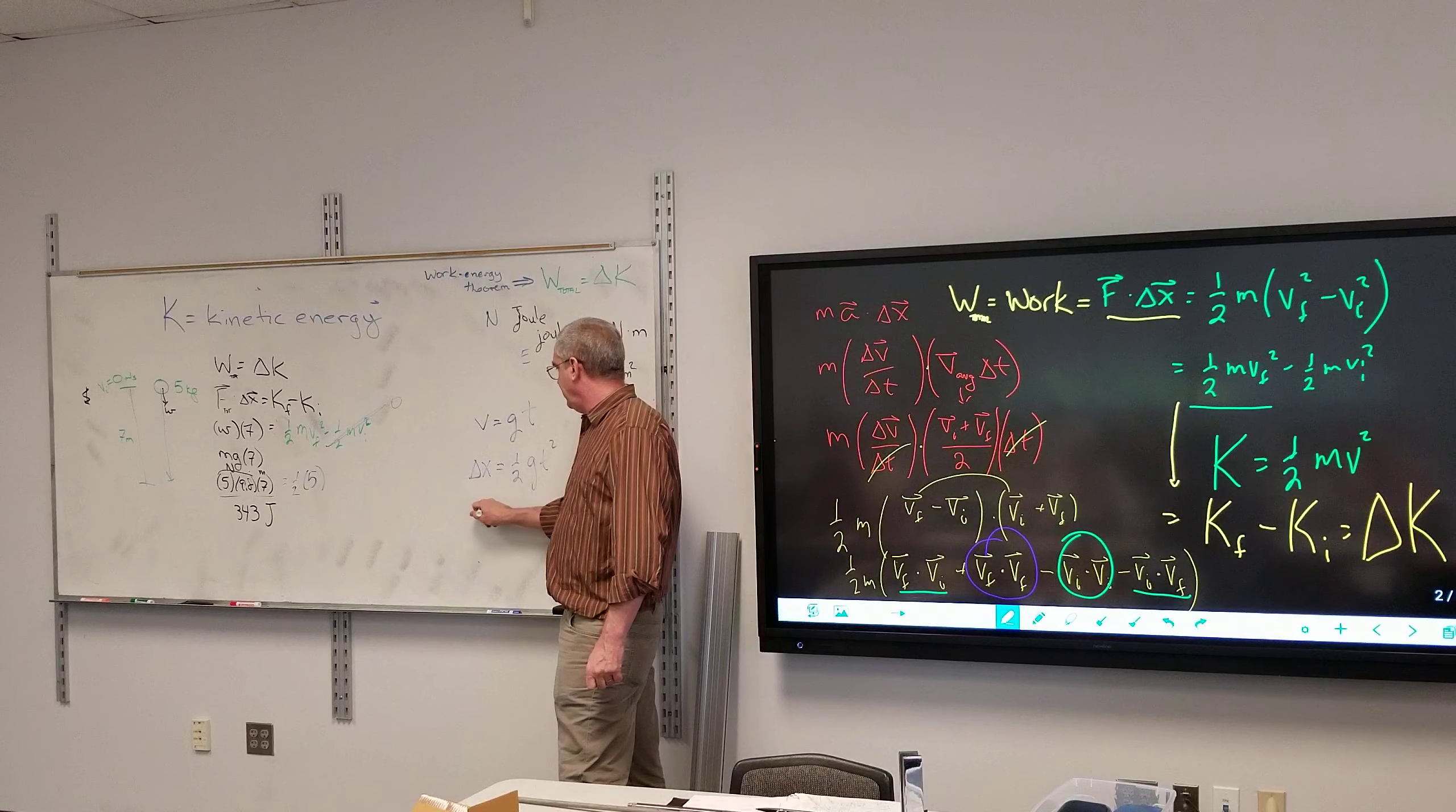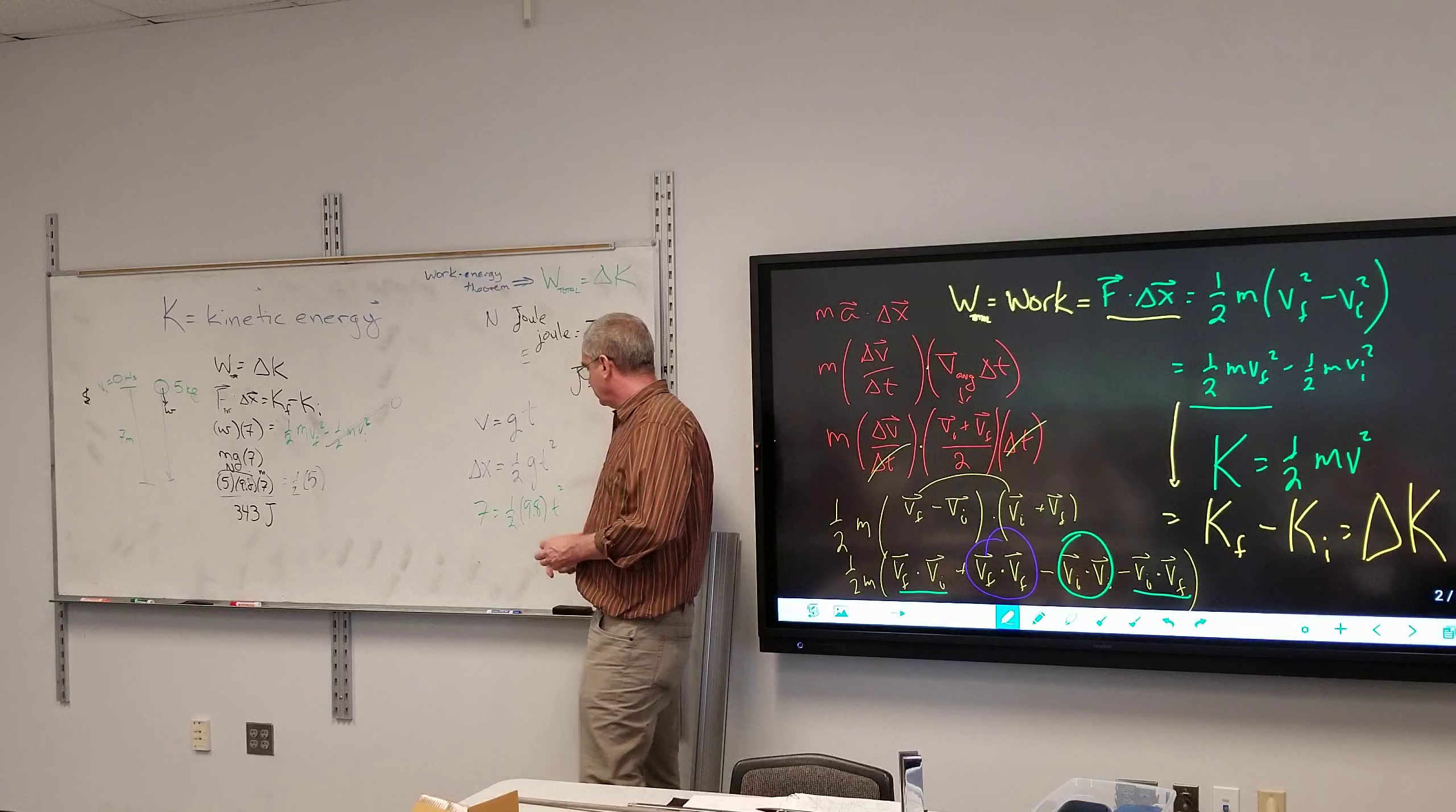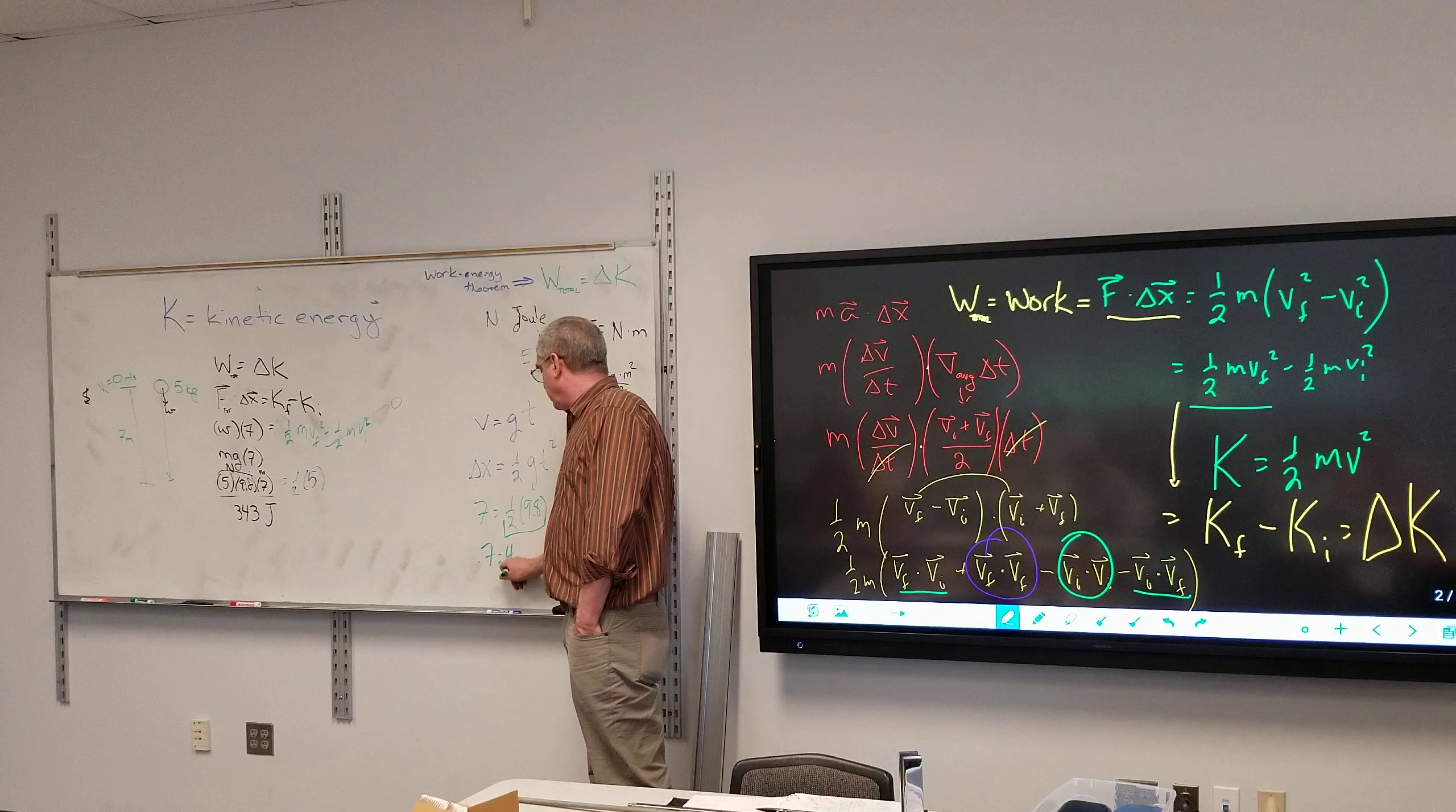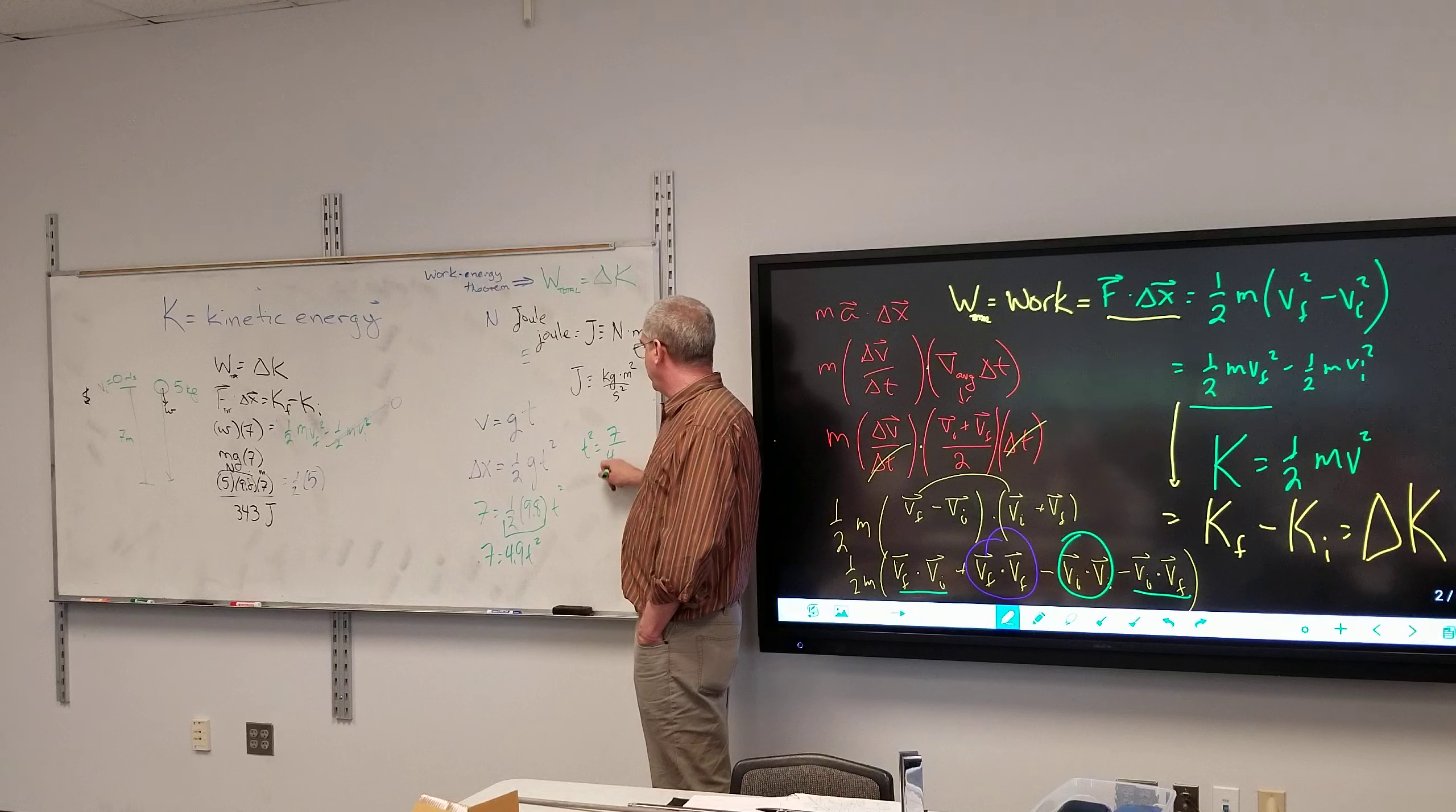Well the distance of seven is one half times nine point eight times time squared. That's just four point nine, so I have seven is equal to four point nine t squared. So my time squared is seven divided by four point nine.